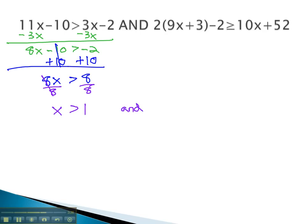And to solve the other inequality, we can start by distributing through the parentheses. 18x plus 6 minus 2 is greater than or equal to 10x plus 52. After distributing, we often combine like terms, giving us 18x plus 4 is greater than or equal to 10x plus 52.